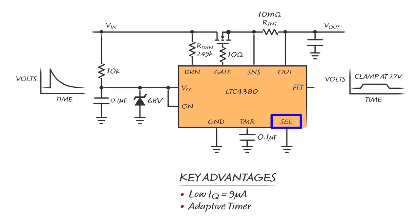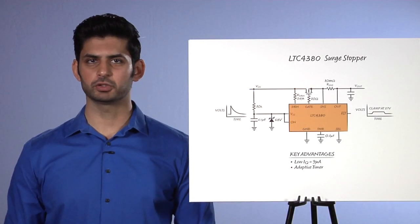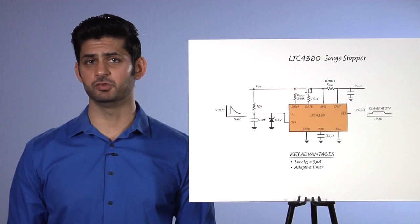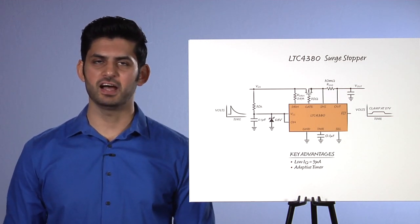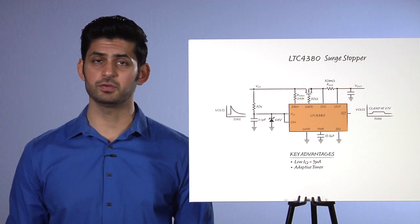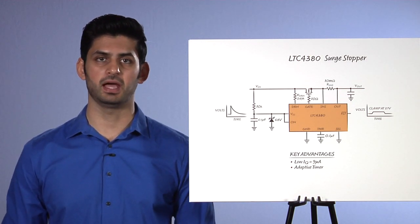The LTC4380 also has a select pin, which allows us to choose between two different clamp levels. Grounding the select pin will result in a gate clamp voltage of 32 volts, whereas connecting it to VCC sets a gate clamp voltage level of 53 volts. This saves board space by eliminating the need for feedback resistors. Keep in mind that the output clamp voltage will be the gate clamp voltage minus the threshold of the MOSFET. As an example, for a 5-volt threshold MOSFET with the select pin grounded, the output would clamp at 27 volts.